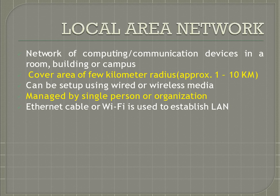A LAN can be set up using wired media like UTP cables or coaxial cables, or wireless media like infrared and radio waves. If a LAN is set up using unguided wireless media, it is known as WLAN — that is, Wireless LAN.